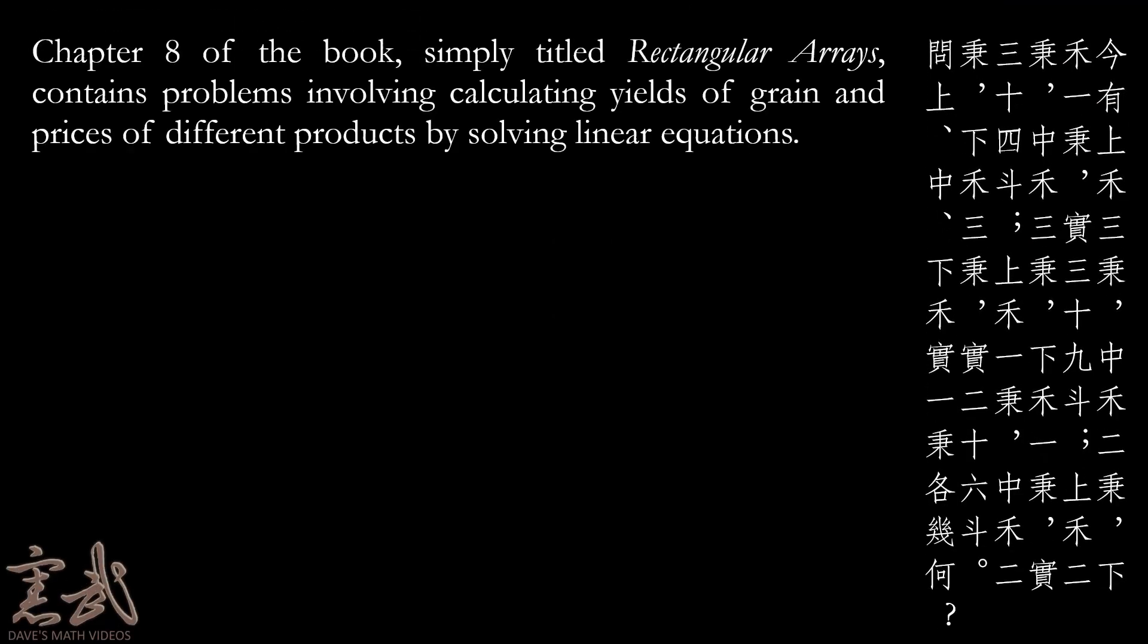In any case, here is the question. As we can see, there is the Chinese text on the right-hand side of the screen. In chapter 8 of the book, which is simply titled Rectangular Arrays, there are several problems involving calculating the yields of grain and prices of different products, and the method they use for this is solving systems of linear equations.